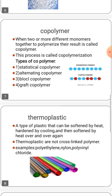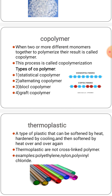Next one is copolymer. A copolymer is made of two or more monomer pieces. Many commercial polymers are copolymers. Examples: polyethylene, vinyl acetate, nitrile rubber. The process in which a copolymer is formed from multiple species of monomers is known as copolymerization. It is often used to improve or modify certain properties of plastics.